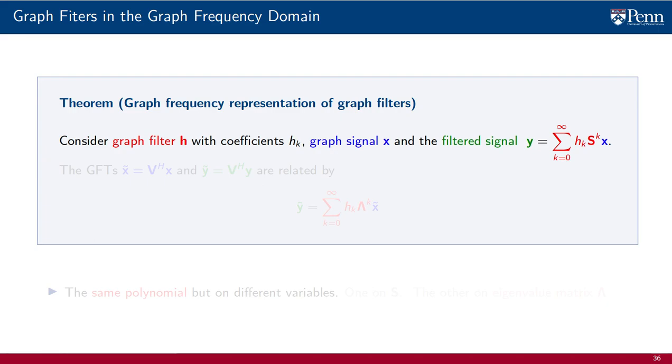The filtered signal is defined as a polynomial on the adjacency matrix modulated with coefficients hk. If we introduce the GFTs x̃ and ỹ of the input and output signal, we can relate the GFTs through multiplication with a polynomial on lambda modulated by coefficients hk. The matrix that appears in this polynomial is lambda, the diagonal matrix that contains the eigenvalues of the graph shift operator.